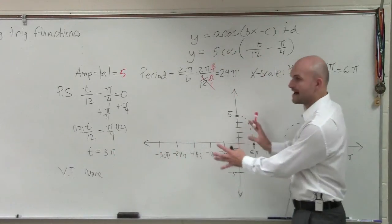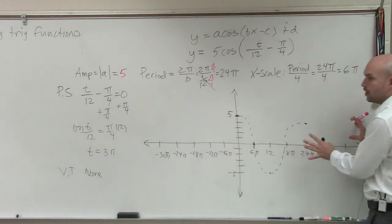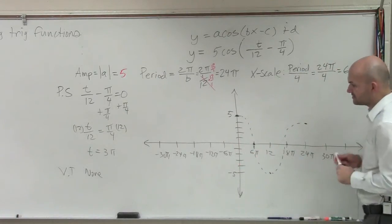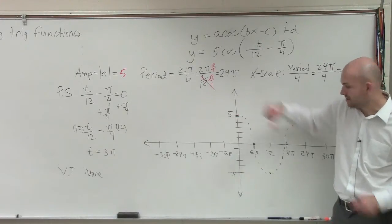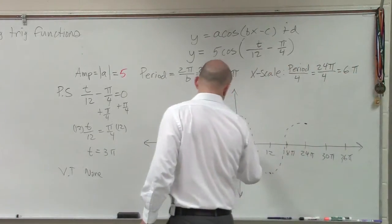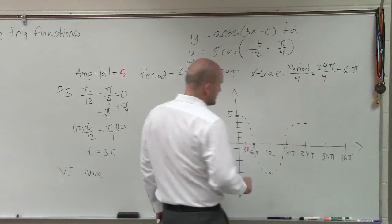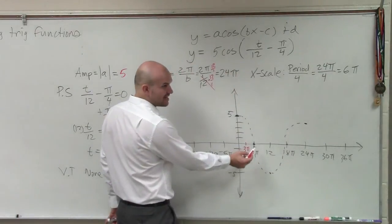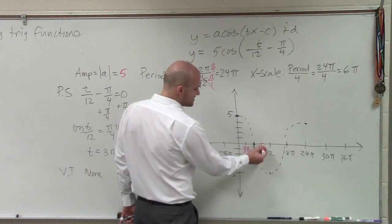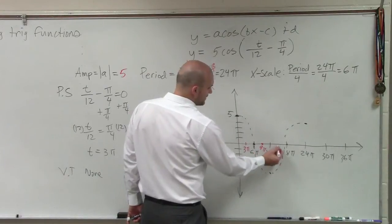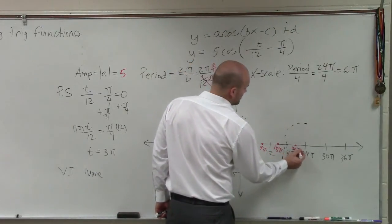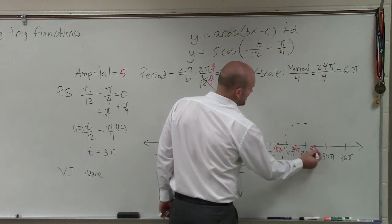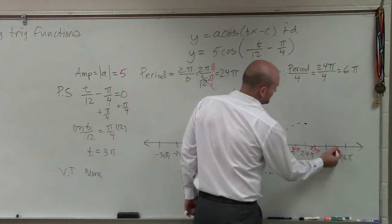So that means this whole graph gets shifted over three units. So instead of my maximum being at zero, it's now going to be at 3π. Instead of my x-intercept being at 6π, it's now going to be at 9π, 15π, 21π, 27π, 33π.